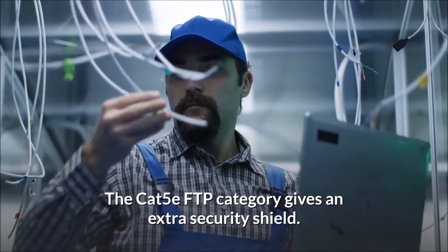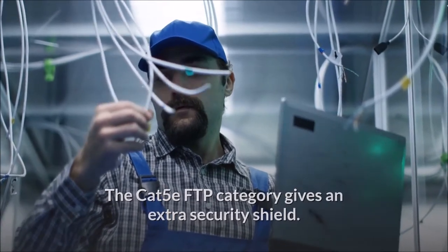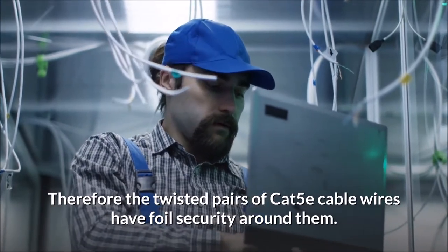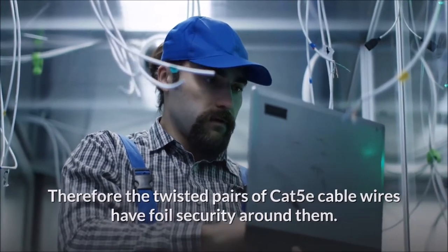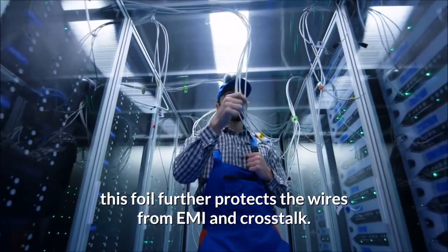The Cat 5e FTP category gives an extra security shield. Therefore the twisted pairs of Cat 5e cable wires have foil security around them. Furthermore, this foil further protects the wires from EMI and crosstalk.